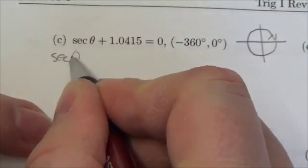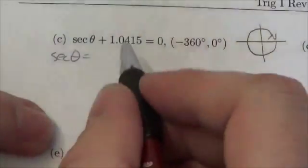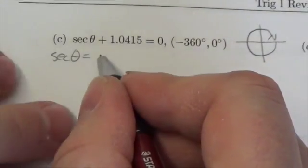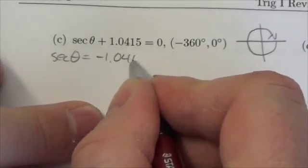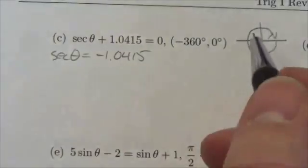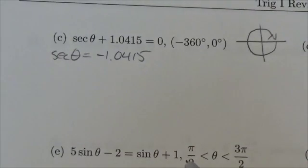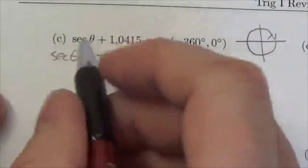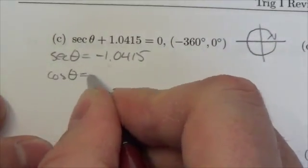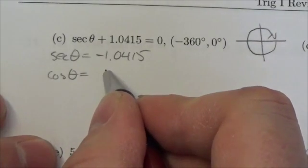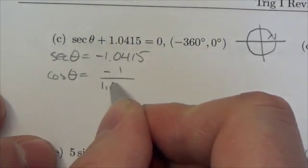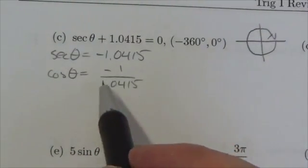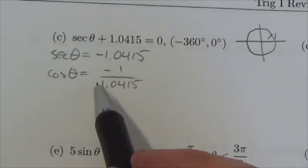My first goal is to isolate the trig function. I'll bring the 1.0415 over to get secant of theta equals negative 1.0415. Since I'd rather work with something more familiar, I'm going to reciprocate both sides. The left side becomes cosine, and the right side becomes negative 1 over 1.0415.